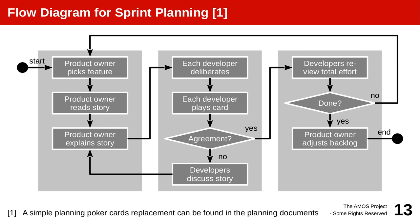So what happens is that the product owner explains the feature, and then each developer thinks by themselves about what size it might be. In the physical world, they would hold cards close to their chest, and then once they've all deliberated, on the count of one, two, three, go — they will all put their cards on the table. Then you would see what disagreement there is, if any. Disagreement is good, because competent people have different opinions. So you start with the largest number and the product owner asks that person: why do you think this is so complex? And then you ask the other outlier — the lowest number — why do you think it's so easy? And then they explain, and the others listen and comment.